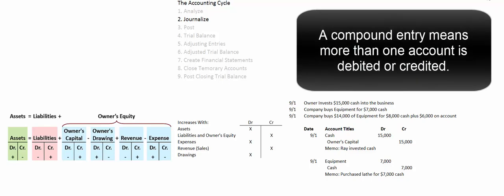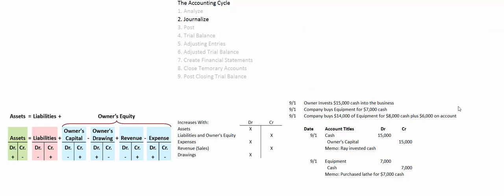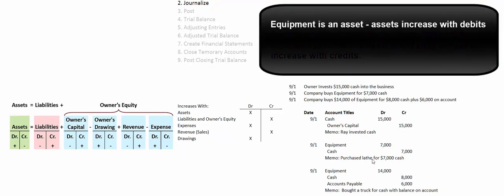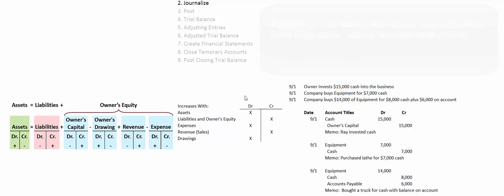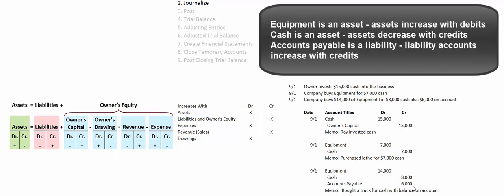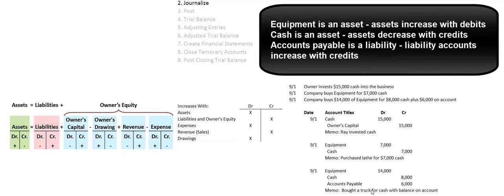Now let's do a compound journal entry. The company buys $14,000 of equipment, putting $8,000 down and the rest on account — meaning accounts payable, to be paid later. Equipment is an asset, so assets increase with debits — we debit equipment for $14,000. Cash is an asset decreasing, so we credit cash for $8,000. Accounts payable is a liability — any account with the word 'payable' is a liability — so it increases with a credit for $6,000. We use precise account titles and add a memo: bought a truck for cash with a balance on account.